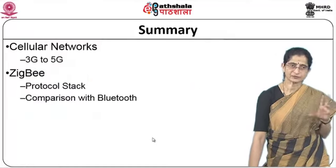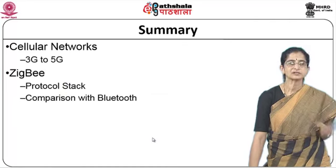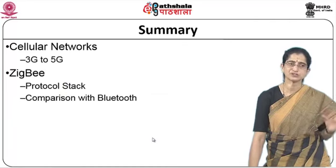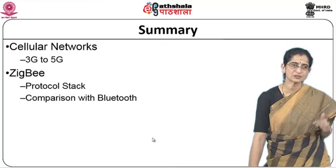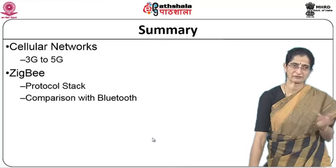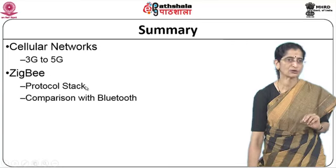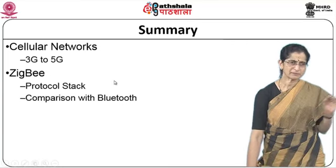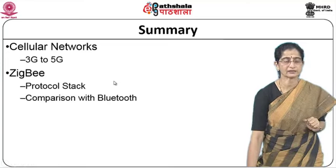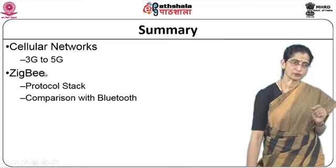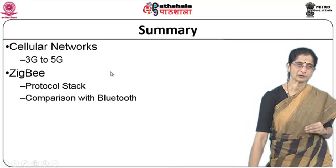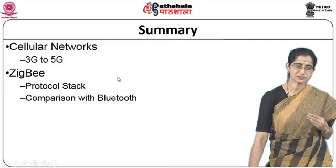To summarize, in this session we looked at two different things: cellular networks, covering the evolution from 3G to 5G with all the associated terminology — truly an alphabet soup of terms — and the basic architecture for how data transfers are handled. We also had an overview of the ZigBee protocol, used for low-rate PAN applications, including its protocol stack and a comparison with Bluetooth.